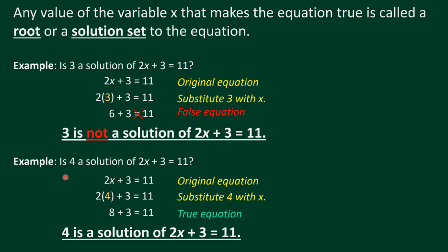Now let's try: is 4 a solution of 2x plus 3 equals 11? We substitute x with 4: 2 times 4 is 8, plus 3 equals 11. So 8 plus 3 is 11, which equals 11. Therefore, this is a true equation and 4 is a solution of 2x plus 3 equals 11.